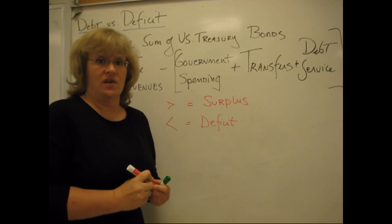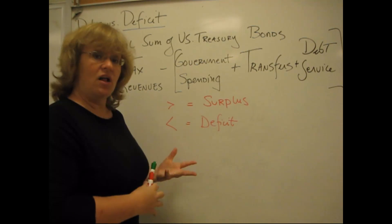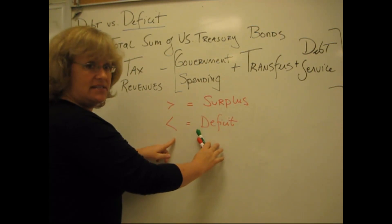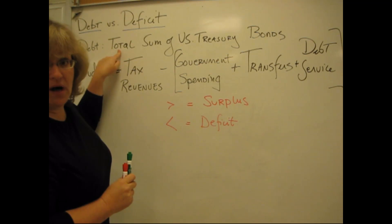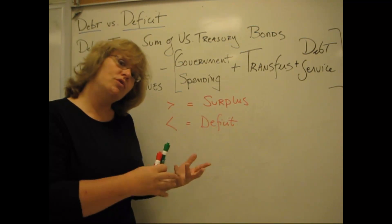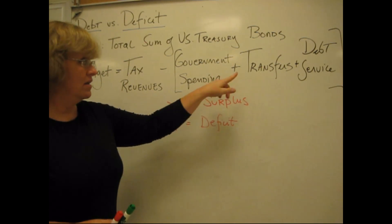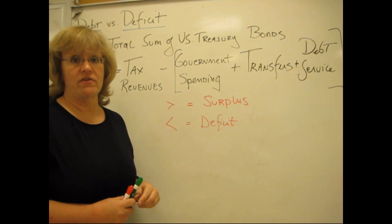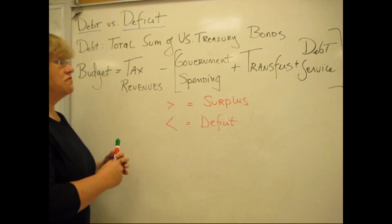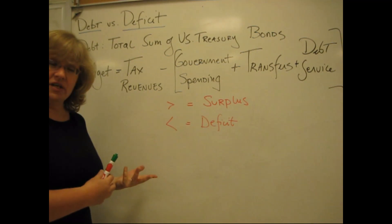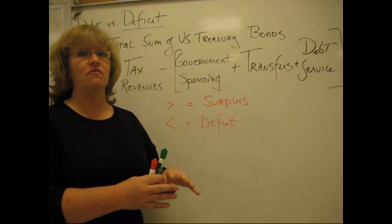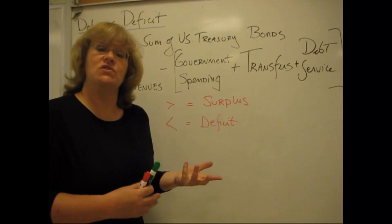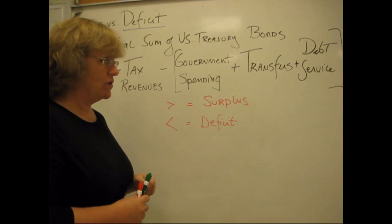The way we finance a budget deficit is by borrowing — we sell more bonds. So every time we go through an entire calendar year with the budget in deficit, the debt goes up, because the Treasury will have sold bonds to pay for the government spending, transfers, or debt service that we couldn't cover through tax revenues. The budget is measured on a monthly, quarterly, or yearly basis. The debt is, in a sense, the sum of all those deficits accumulated over all the years, going back as far as 30 years, which is the longest term government bond we sell.